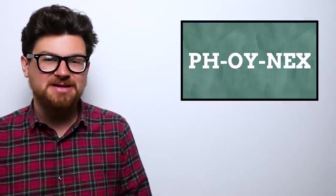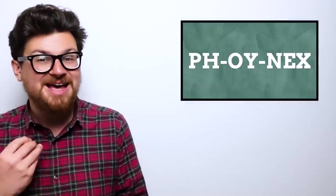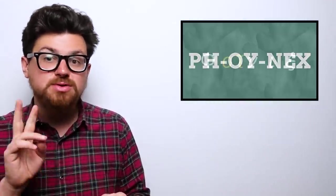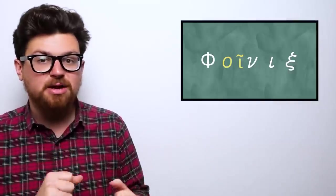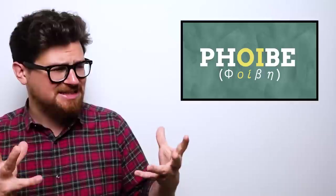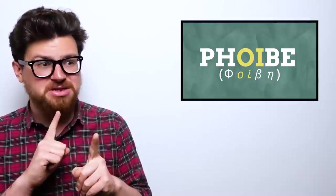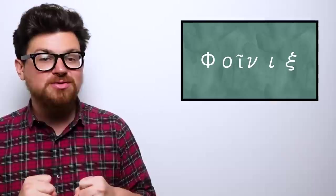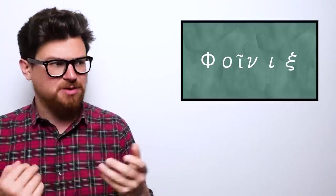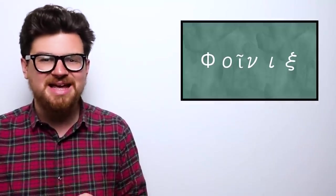That O sound in the middle of Phoenix was made with those two Greek characters. And if you look at the Greek spelling of the name Phoebe, that has the exact same two characters in the middle of it too. When the Romans adapted this Greek word of Phoenix into the Latin alphabet, the one most of us are using to this day, they represented that O sound with an O and an E.